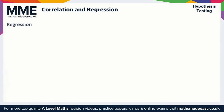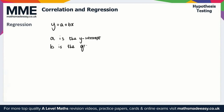Moving on to regression: the regression line of y on x is the line of best fit, and it's always written in the form y = a + bx. Here, a is the y-intercept and b represents the gradient. Notice this is of the form y = mx + c — we've just changed m to b and c to a.